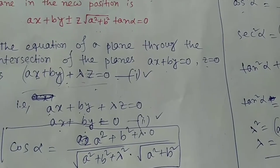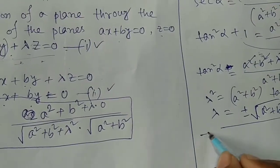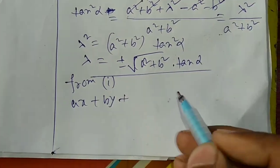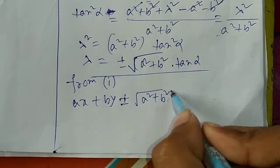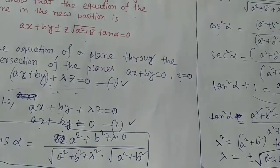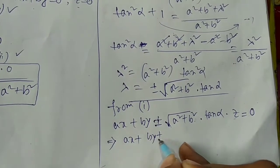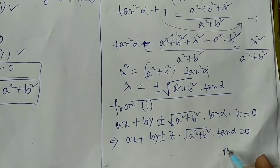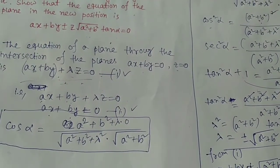Now we substitute this lambda value back into our plane equation. The equation was (x plus by) plus lambda times z equals to 0. Substituting lambda, we get: x plus by plus minus z times root(a squared plus b squared) times tan alpha equals to 0. This is exactly what we were given to prove.